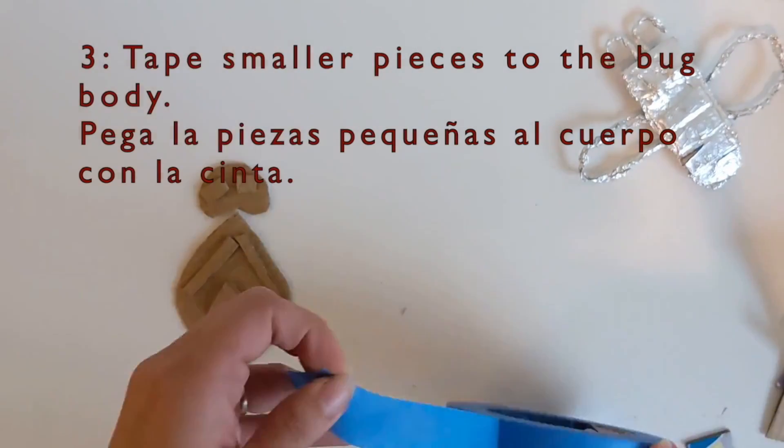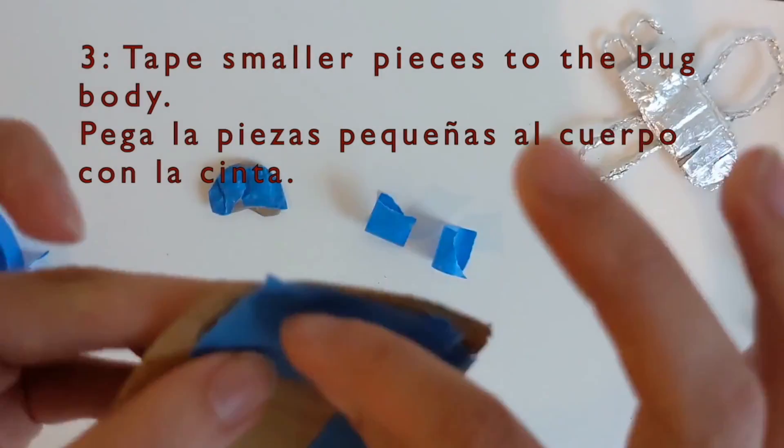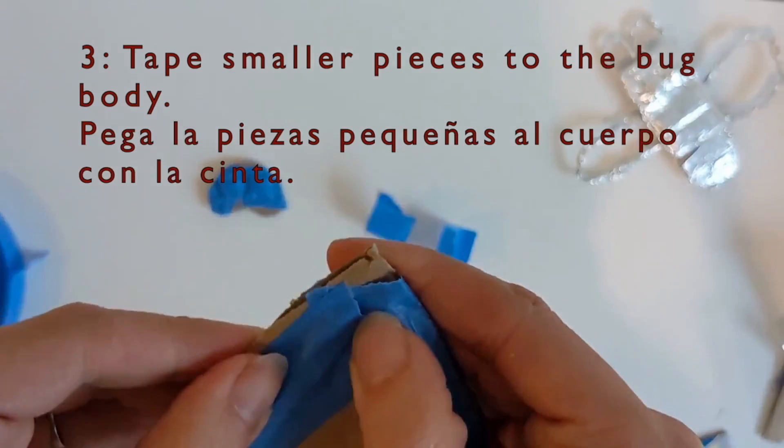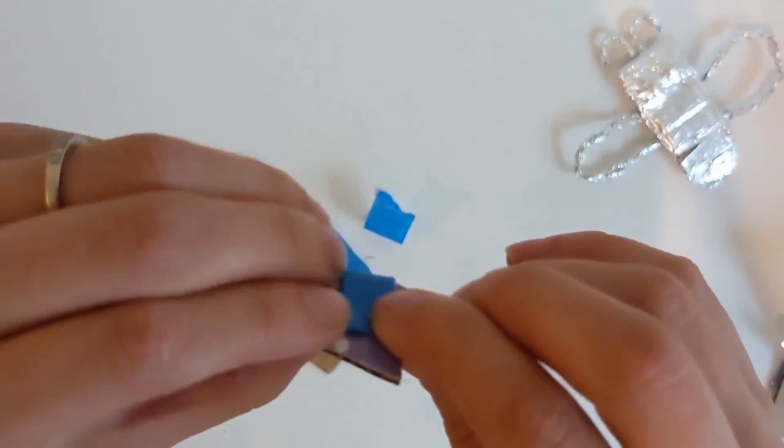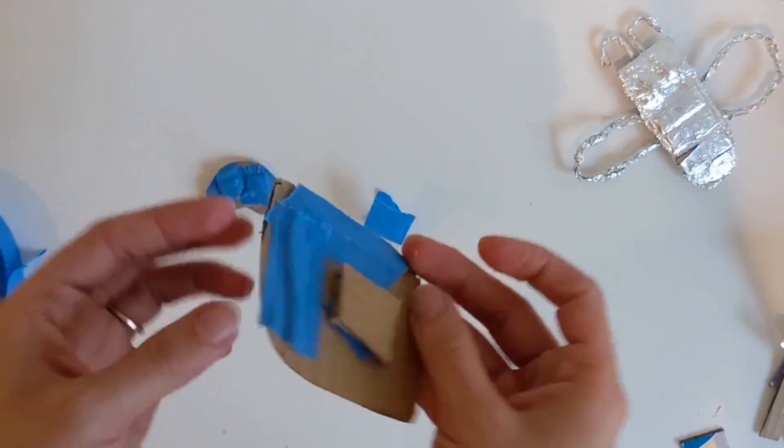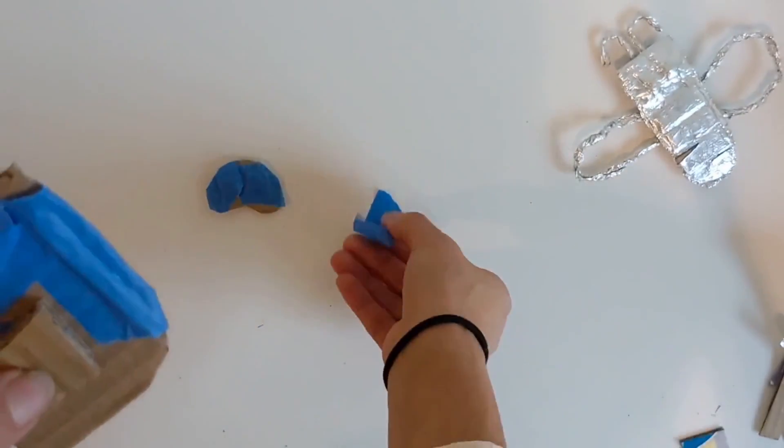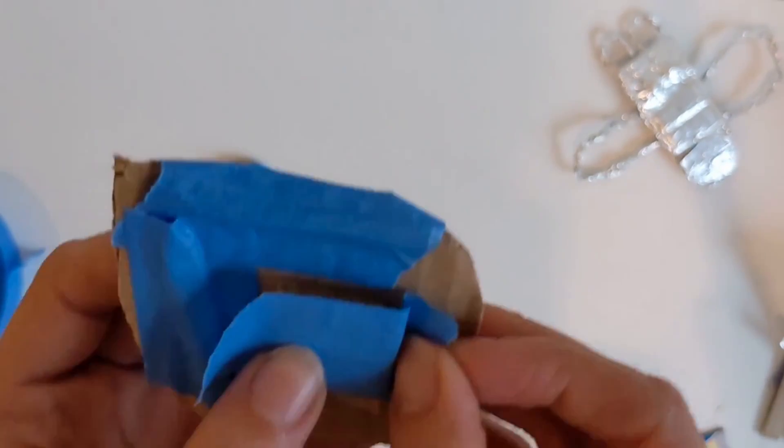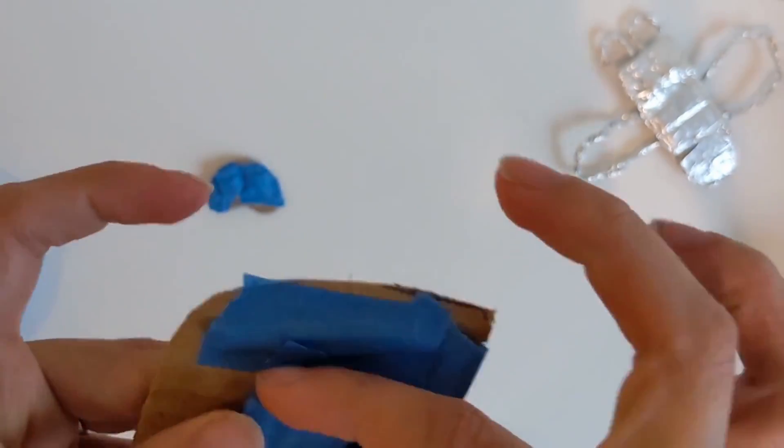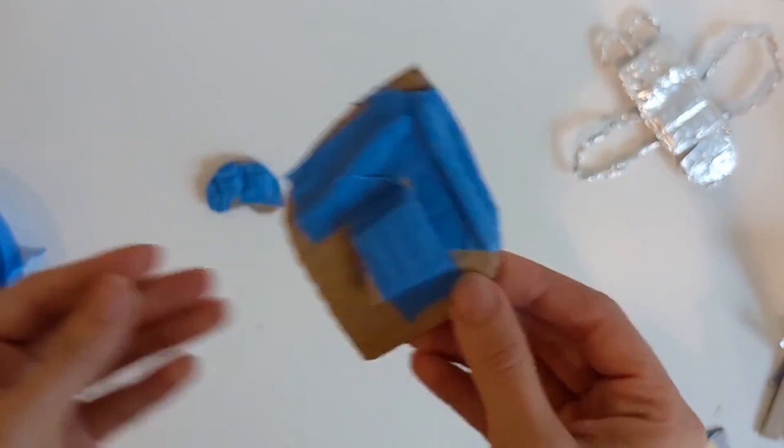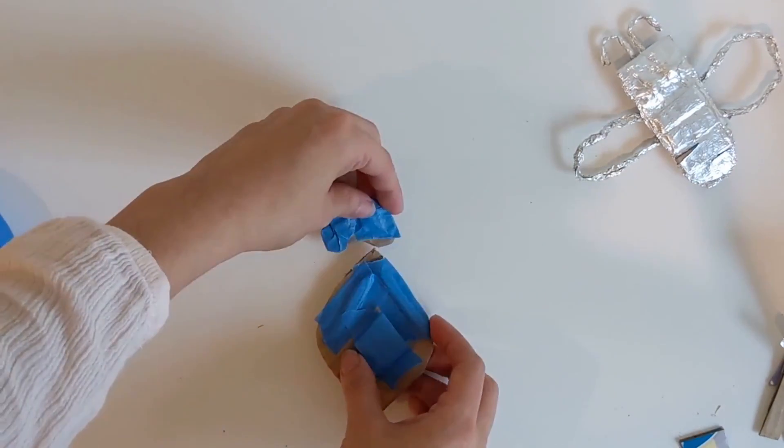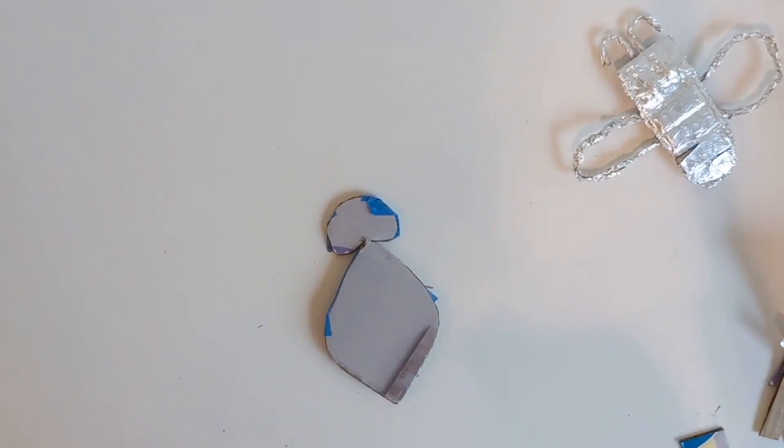Secure your small cardboard pieces using masking tape, using your fingers to press down so that the pieces are fastened on really tightly. You can stack some of the shapes on top of one another to make them more visible. If you have more than one big cardboard piece, secure them together with tape on the back side.